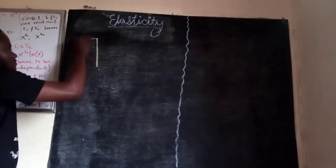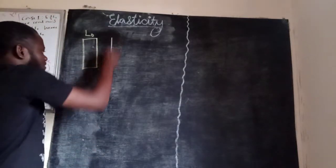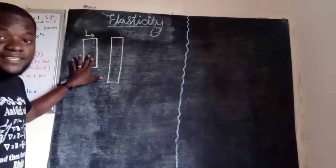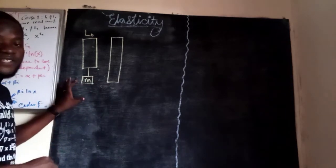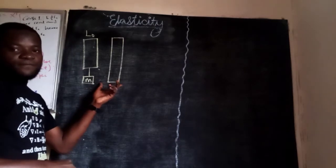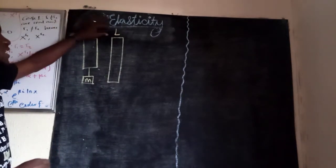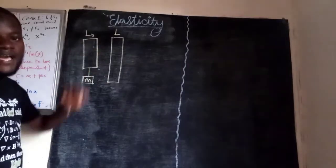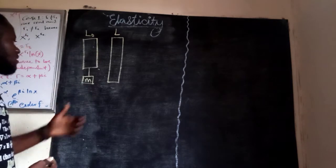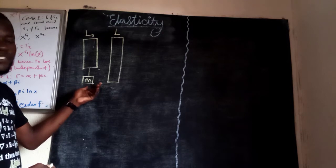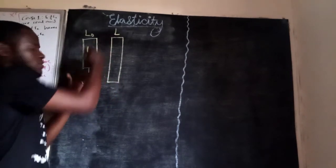Let's take for instance that I have a substance and the length of this substance is L-naught. This is the same substance when there is no force on it. When I apply force — let's say I apply mass M on this substance — the length increases. The initial length is called L-naught and the new length after applying mass is L. This material deforms as a result of the force applied on it. If I remove this force and the material is elastic, it tends to go back to its equilibrium position.